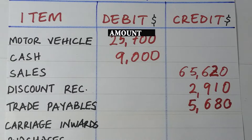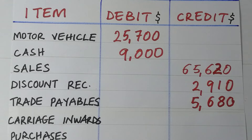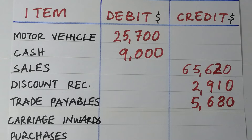Now we have carriage inwards. Carriage inwards is the transport cost spent on bringing purchases or stock into your business. It is considered a direct expense, and because of its expense nature, it will be a debit balance. All expense accounts have debit balances.